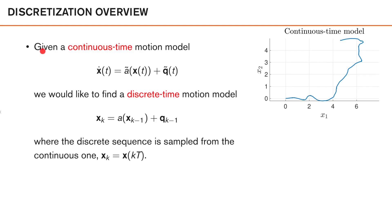We will assume that we are given a continuous time motion model expressed in terms of a differential equation, where we have the time derivative of our state sequence equal to some function a-tilde of our state sequence plus some additive noise. For a two-dimensional model, our time continuous motion model could look something like this, where we describe our motion as a time continuous function.